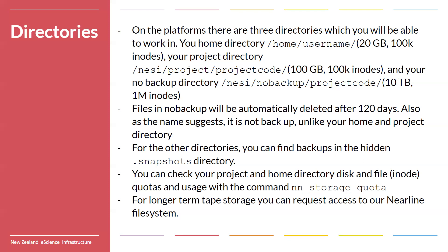For each project you are a member of, you'll have access to project directories. The first of these is your persistent project directory, found at `/nesi/project/your_project_code`. It has a default disk space of 100 gigabytes and an inode limit. It is backed up daily — you can find backups in the hidden `.snapshots` directory of your project directory, as well as in your home directory. It's persistent, so we won't automatically delete anything in your home or project directory. This is where you should be storing persistent datasets and outputs you're working on as part of the project — things you'll need semi-regularly, as well as where you will be installing your software.